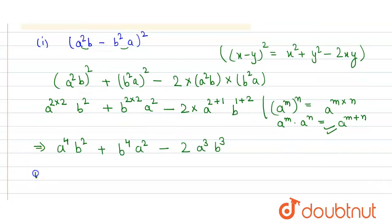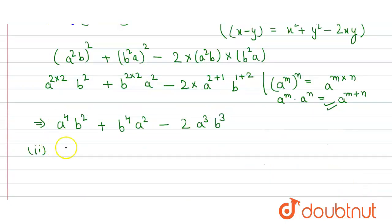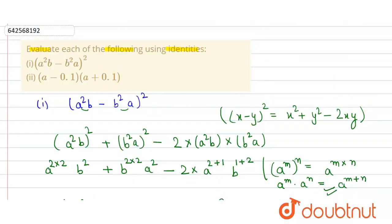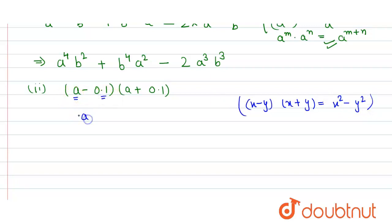For the second part, the expression is (a - 0.1)(a + 0.1). We use the algebraic identity: (x - y)(x + y) = x² - y². Here, a is x and 0.1 is y. So we get a² - (0.1)², and (0.1)² = 0.01. Therefore the answer is a² - 0.01.